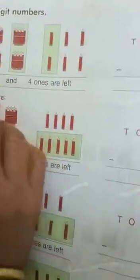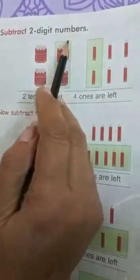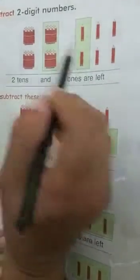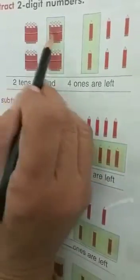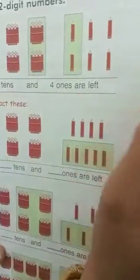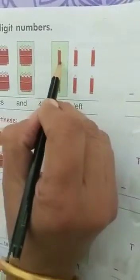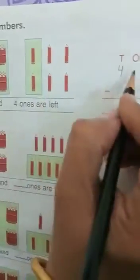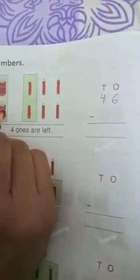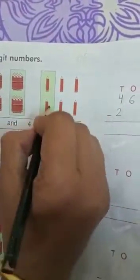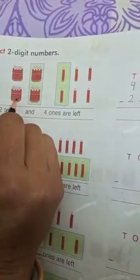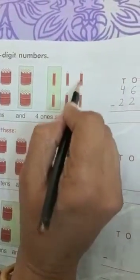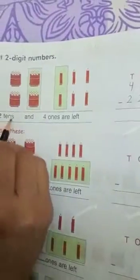Now subtract 2-digit numbers. This is the example. How many tens are here? 4 tens and 6 ones. Now we have to subtract 2 tens and 2 ones. How many pens are left? 2 tens are left, and 4 ones are left. Answer is 24.